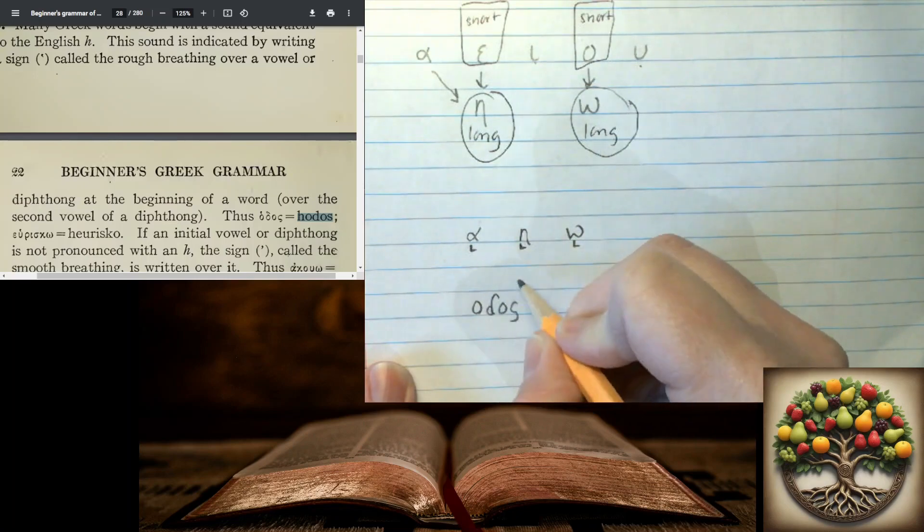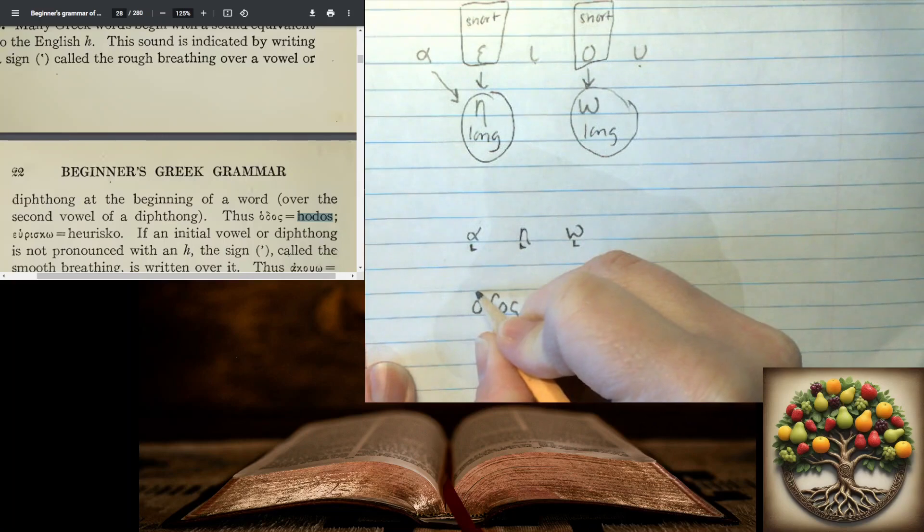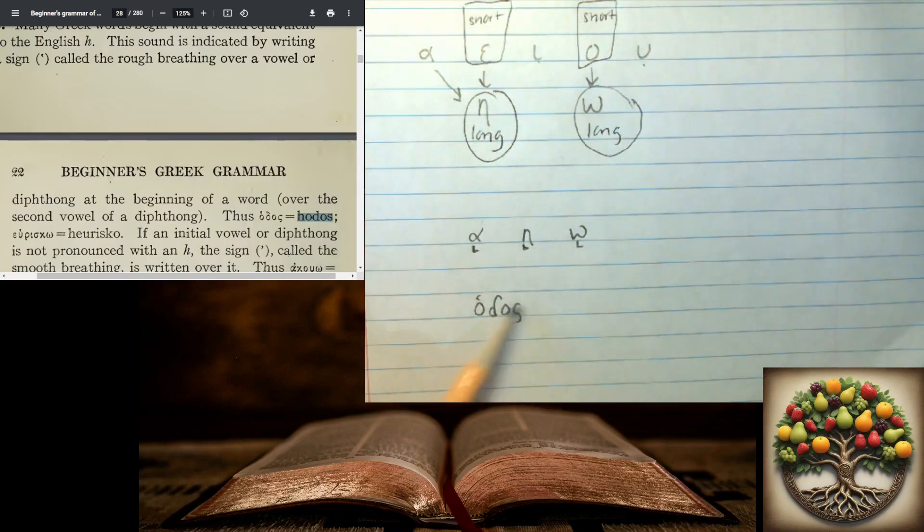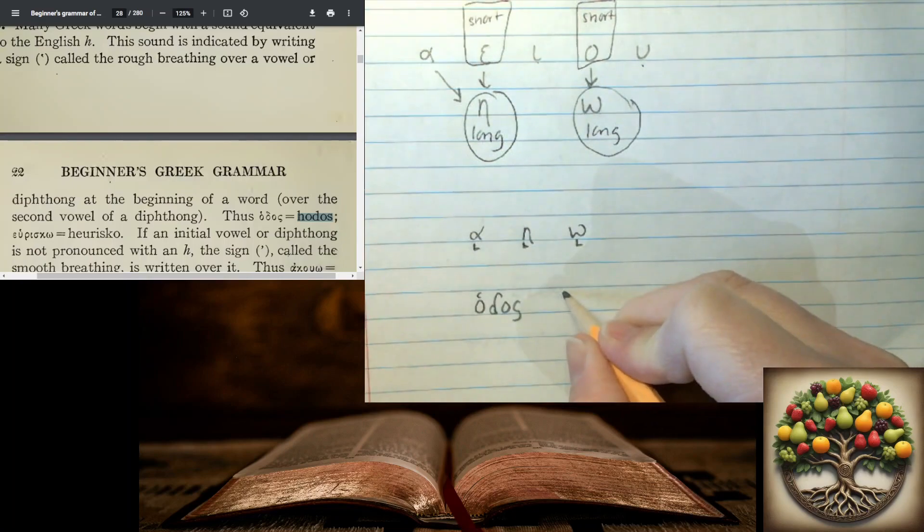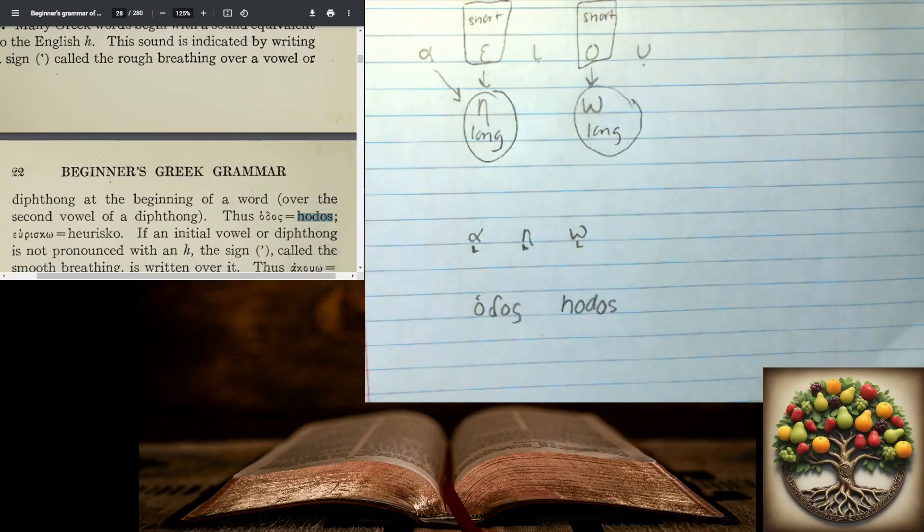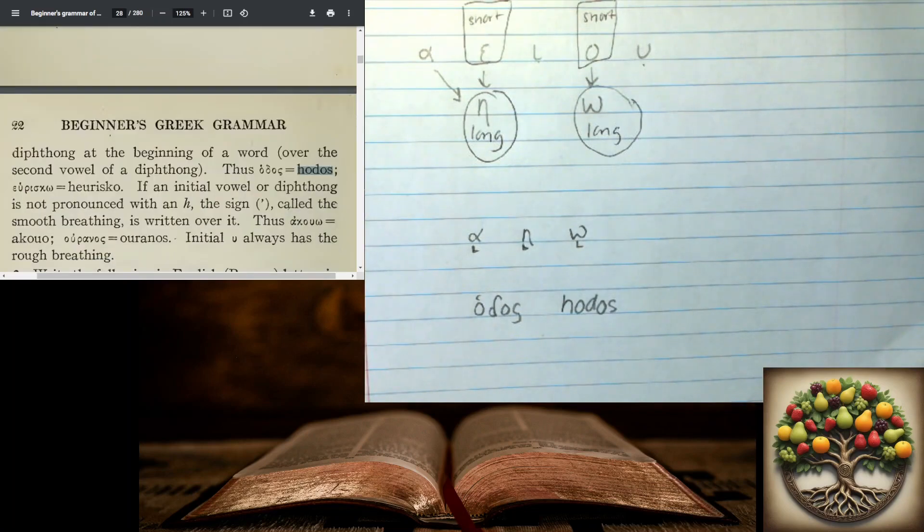And I usually write these at the end of when I write the letters. I then write the breathing marks and the accents. So it's going to kind of that way. So really this sounds like hodos with an H. Now that's the English there. Here's another example with a diphthong. We have the two vowels here. And notice that the breathing mark is over the second vowel.